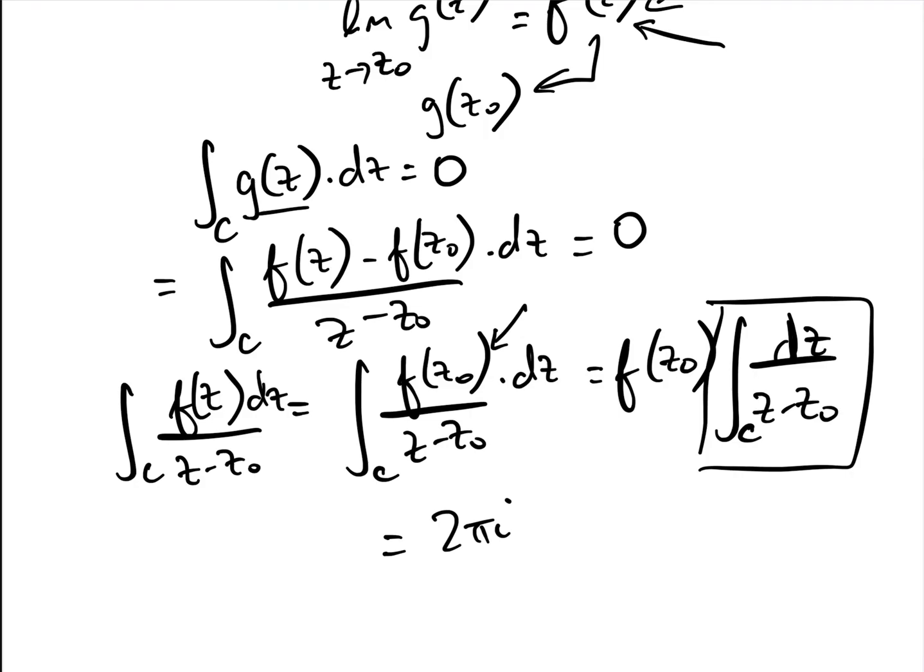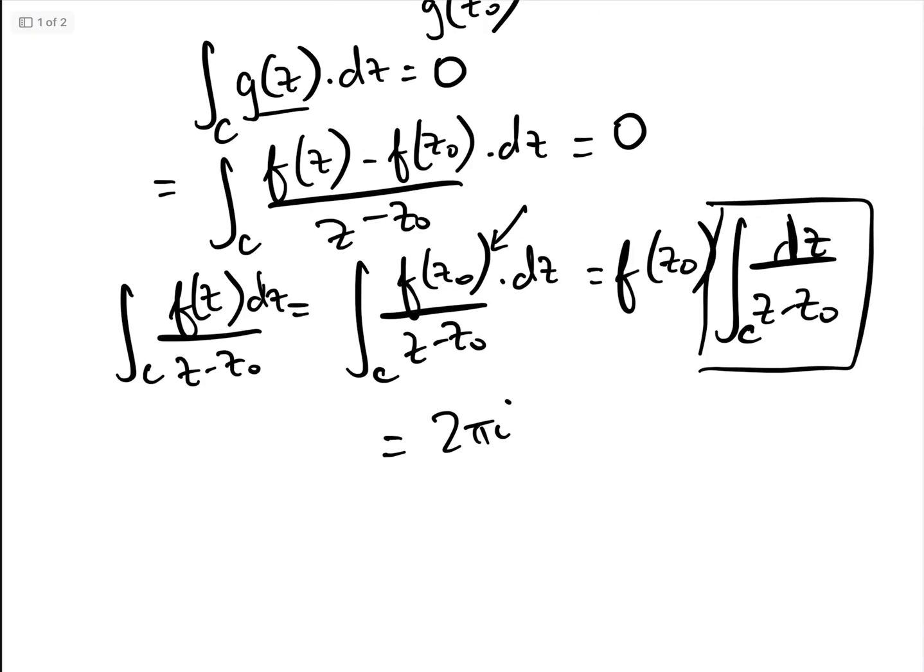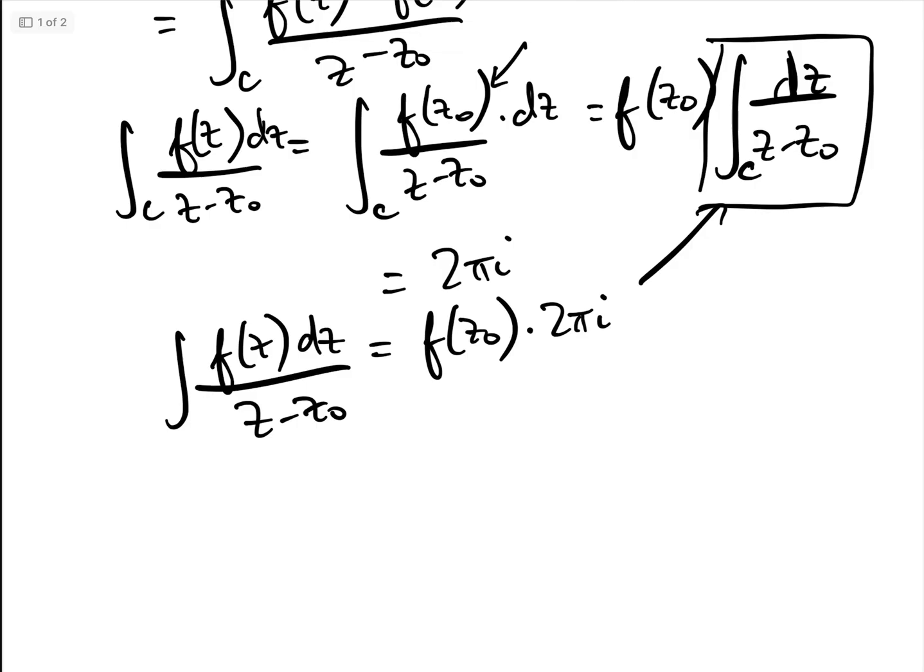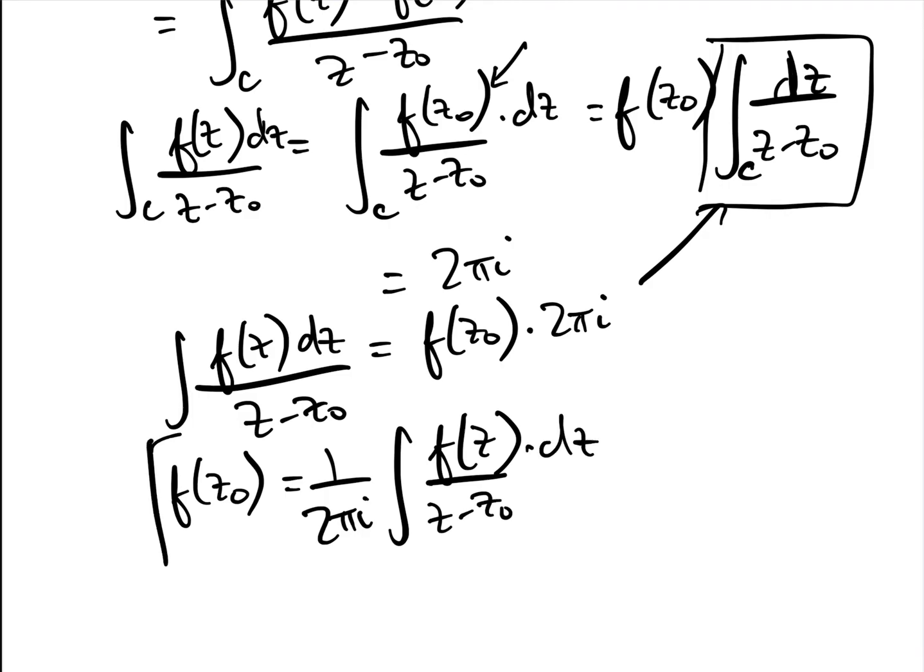We did that in the previous video. Go and have a look at that video if you don't remember that. And, therefore, all of this simplifies to be the integral of f of z dz over z minus z0 equals f of z0 times 2 pi i, which is that bit. And, therefore, that gives us Cauchy's integral formula, which is that f of z0 equals 1 over 2 pi i, the integral f of z over z minus z0 dz. And that is Cauchy's integral formula. So that's the first thing.